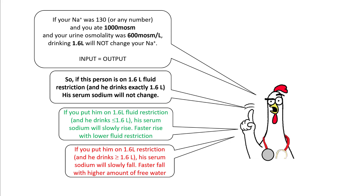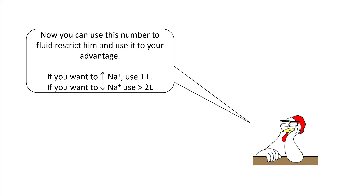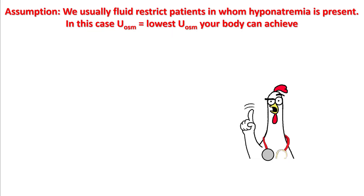You can use this number to fluid restrict your patient. If you want to increase the sodium, fluid restrict him to 1 litre. If you want to decrease the sodium, do not fluid restrict him and encourage free water intake of more than 2 litres. One assumption we are making here is that we usually restrict patients in whom hyponatremia is present, and when hyponatremia is present, technically your urine osmolality is going to be the lowest your body can achieve.